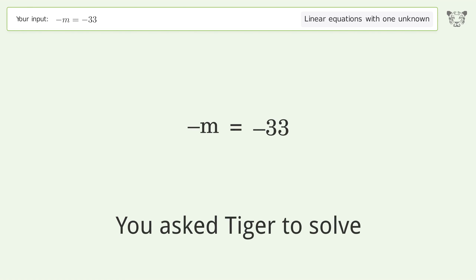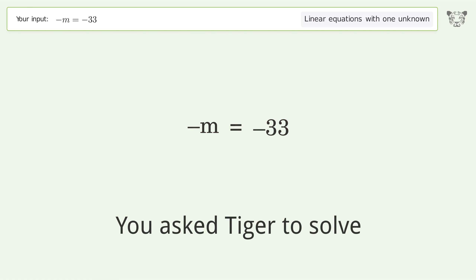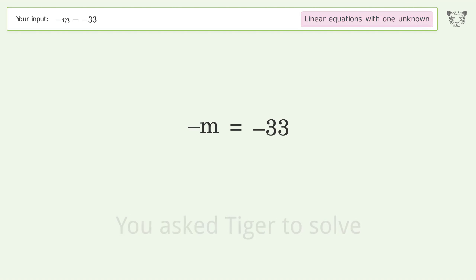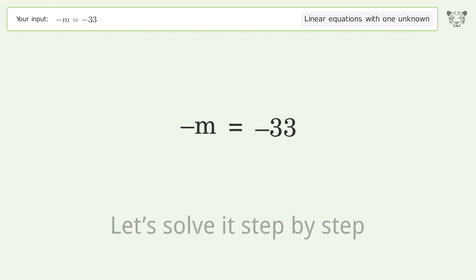You asked Tiger to solve this — it deals with linear equations with one unknown. The final result is m equals 33. Let's solve it step by step.